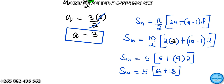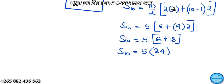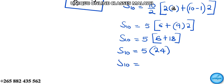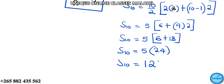So the sum of 10 terms equals 5 times (6 plus 18), which is 5 times 24. And 24 times 5 gives us 120. So the sum of the first 10 terms in the sequence is 120.